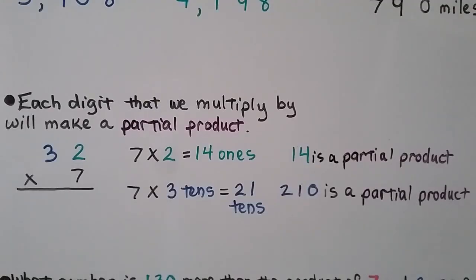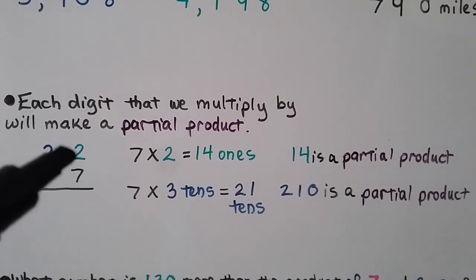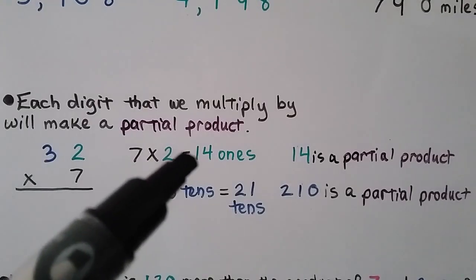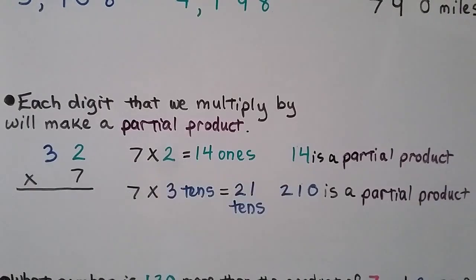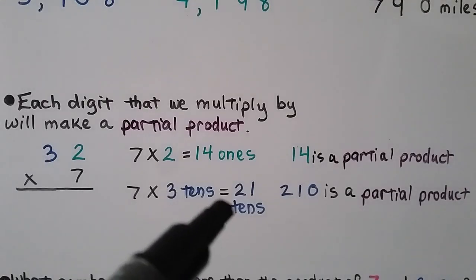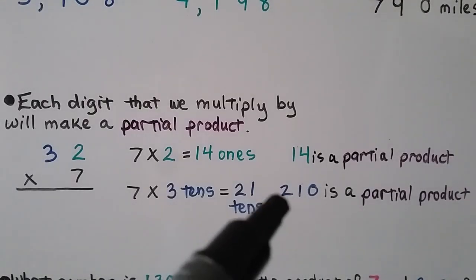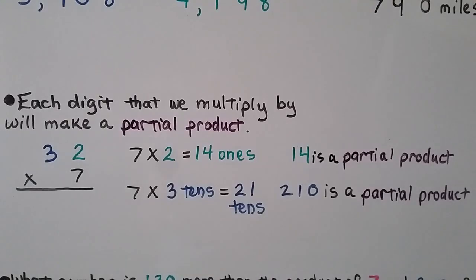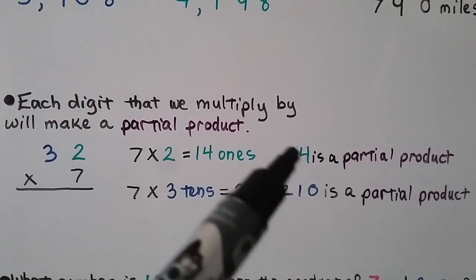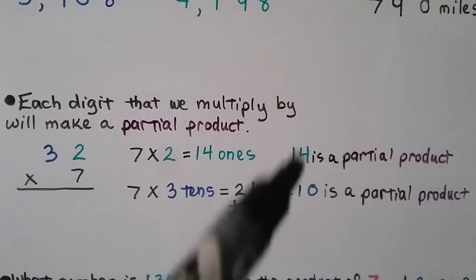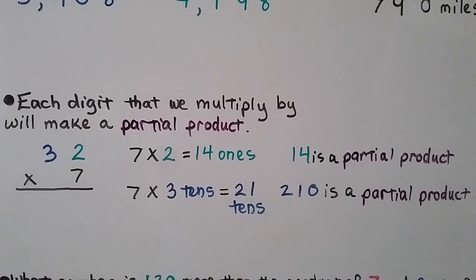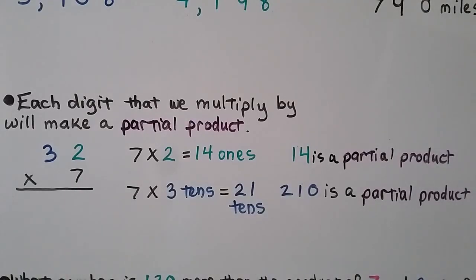Remember, each digit that we multiply by will make a partial product. When we do 7 times 2 ones and get 14 ones, that 14 is a partial product. When we do 7 times 3 tens, we get 21 tens, so 210 is a partial product. We can actually add these partial products together and get 224 as the answer.